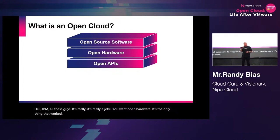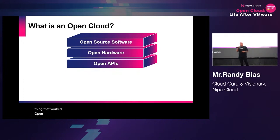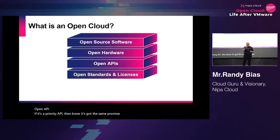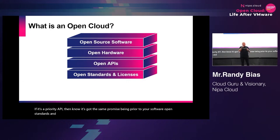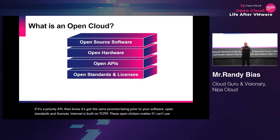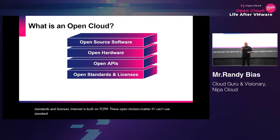Open APIs — if it's a proprietary API, then it's got the same problem as proprietary software. Open standards and licenses: the internet is built on TCP/IP; these open standards matter. If I can't use standard IPMI to talk to your x86 server, it is just not acceptable.